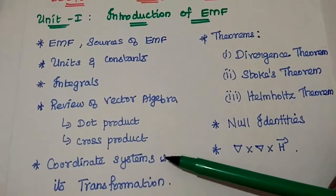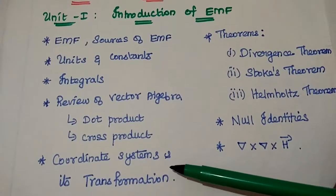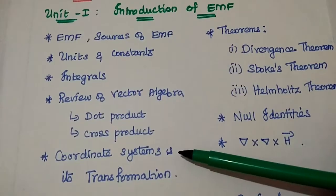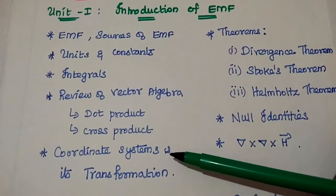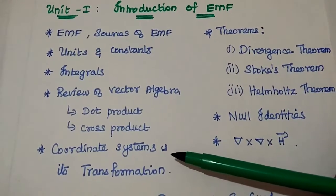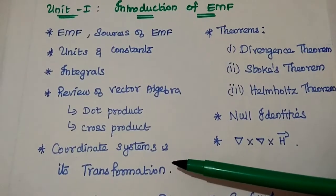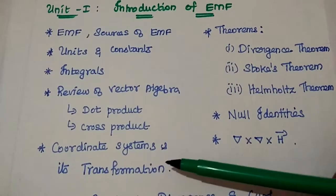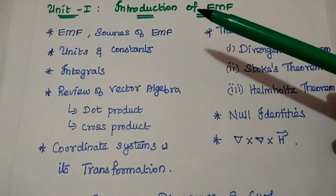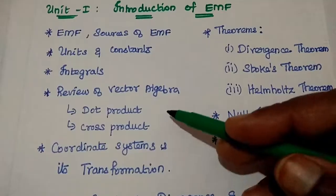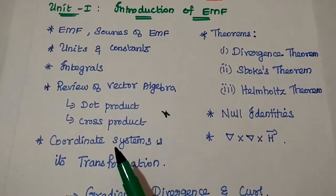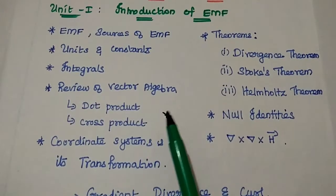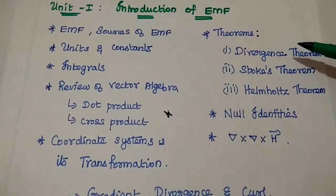The important part is coordinate systems and their transformation. There are three coordinate systems used in EMF: Cartesian coordinate system, cylindrical coordinate system, and spherical coordinate system. We can also transform one coordinate to another. In this first half, coordinate systems and their transformation and the review of vector algebra are the two most important topics.